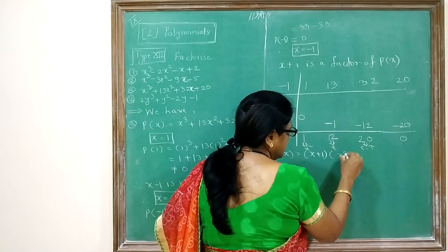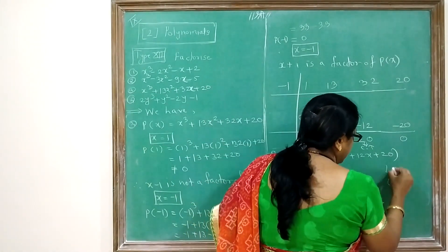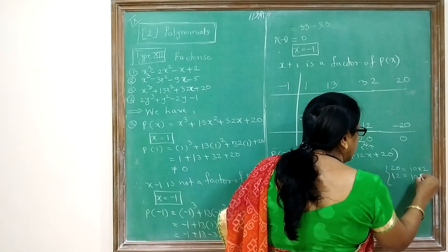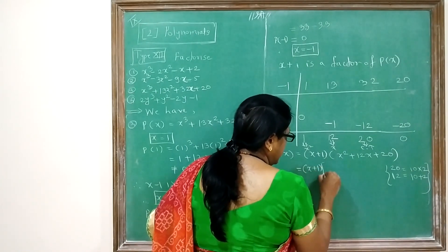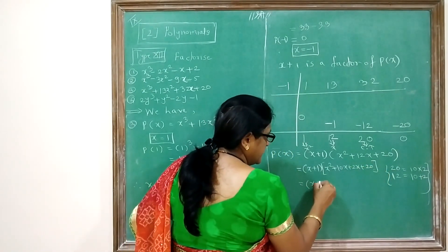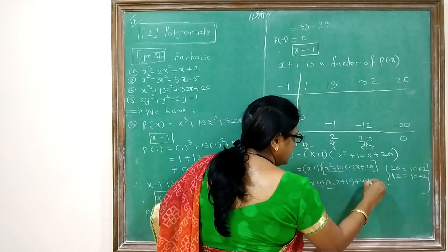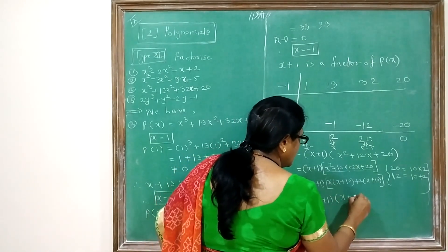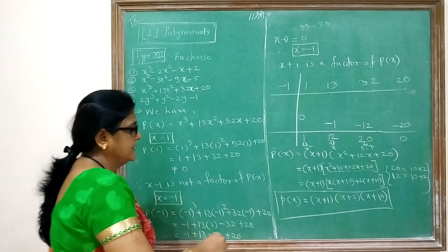So P(x) = (x + 1)(x² + 12x + 20). Now factoring x² + 12x + 20: the product is 20 and the middle term is 12 — that is 10 × 2 = 20 and 10 + 2 = 12. So we write (x + 1)(x² + 10x + 2x + 20) = (x + 1)[x(x + 10) + 2(x + 10)] = (x + 1)(x + 2)(x + 10). This is the answer of P(x).